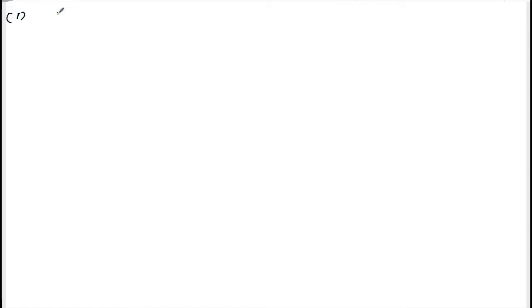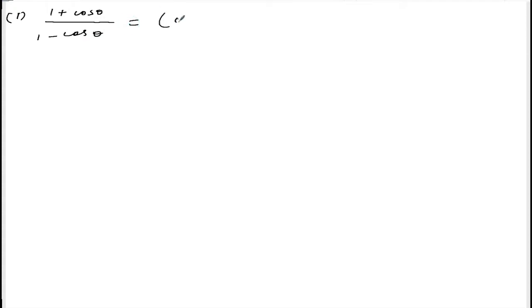Now we are doing exercise 10.2, question number 11, Roman number 1. Let me write down the question. The question says: 1 plus cos theta divided by 1 minus cos theta is equal to cosec theta plus cot theta, whole square.